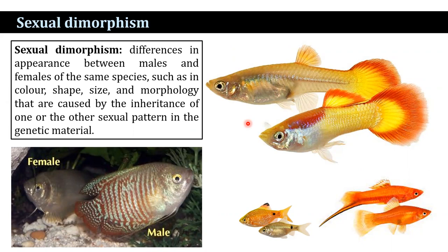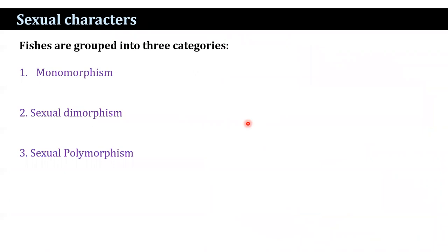Sexual characters in fishes — on the basis of characteristic features such as color, shape, size, and morphology — allow fishes to be grouped into three categories: monomorphism, sexual dimorphism, and sexual polymorphism.